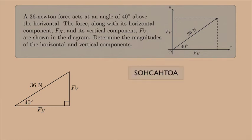So first I'm going to use cosine. The cosine of 40 degrees is the horizontal component divided by 36 Newtons, the adjacent side over the hypotenuse. So the horizontal component is 36 Newtons times the cosine of 40 degrees, or 28 Newtons.